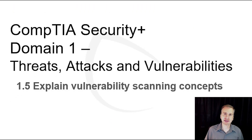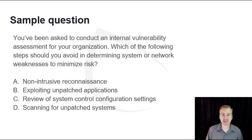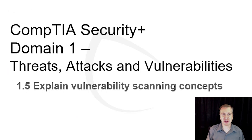In this video, I discussed Section 1.5 about vulnerability scanning concepts. Let's practice on a sample quiz question. You've been asked to conduct an internal vulnerability assessment for your organization. Which of the following steps should you avoid in determining system or network weaknesses to minimize risk? The answer is B: Exploiting unpatched applications. Exploiting is a part of penetration testing and not a part of vulnerability assessments. This concludes the video for Section 1.5. Refer to your study material for more information on this topic.